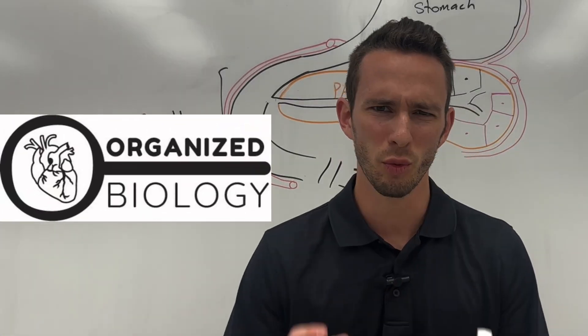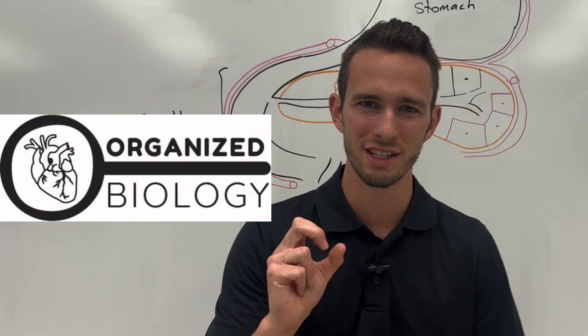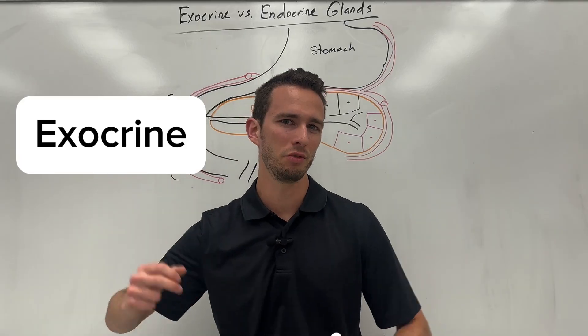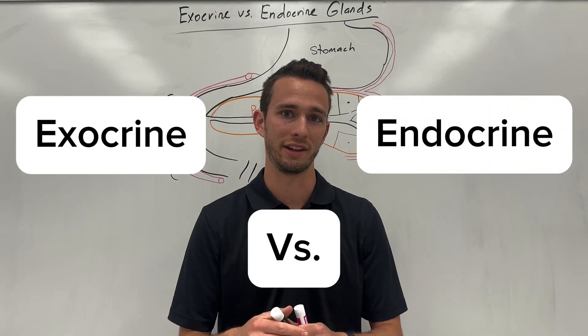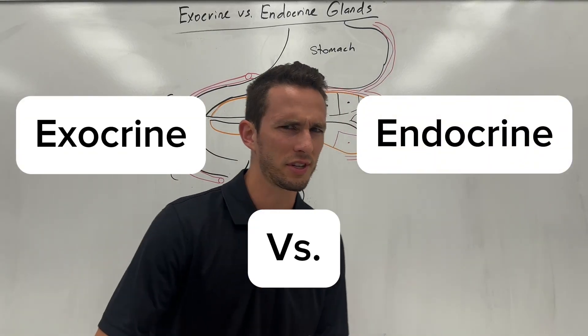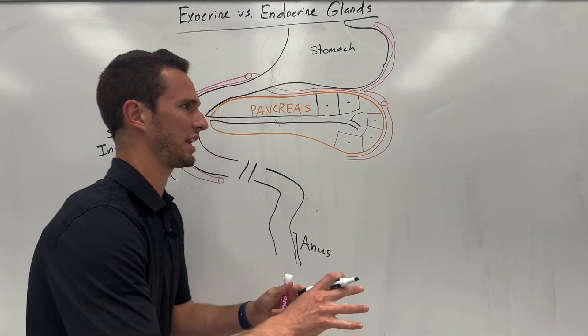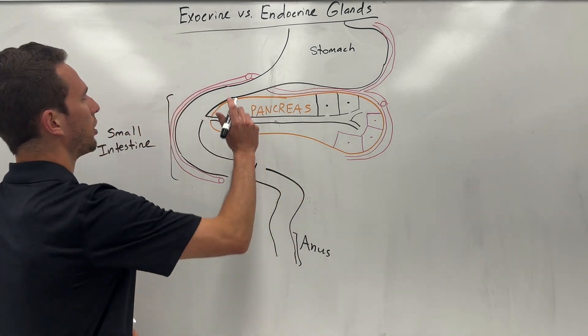Hey everybody, Organized Biology here. I wanted to hop on real quick and differentiate exo versus endocrine glands. My students often have a hard time understanding this, but it's quite simple.